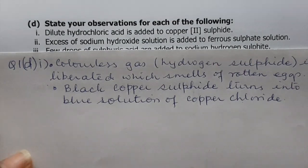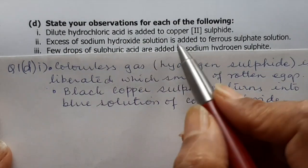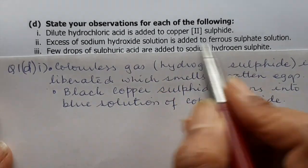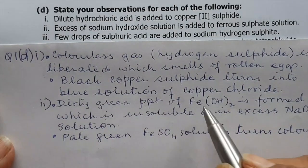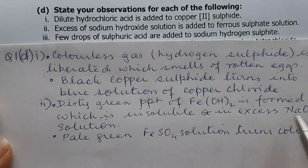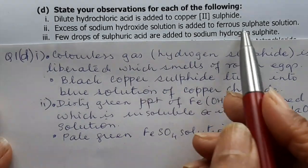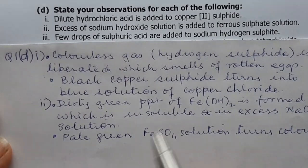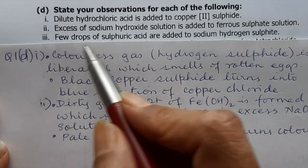(ii) Excess sodium hydroxide solution is added to ferrous sulfate solution: ferrous sulfate becomes ferrous hydroxide. Write that a dirty green precipitate of iron hydroxide is formed, which is insoluble in excess NaOH solution. Also note that the pale green FeSO₄ solution turns colourless.